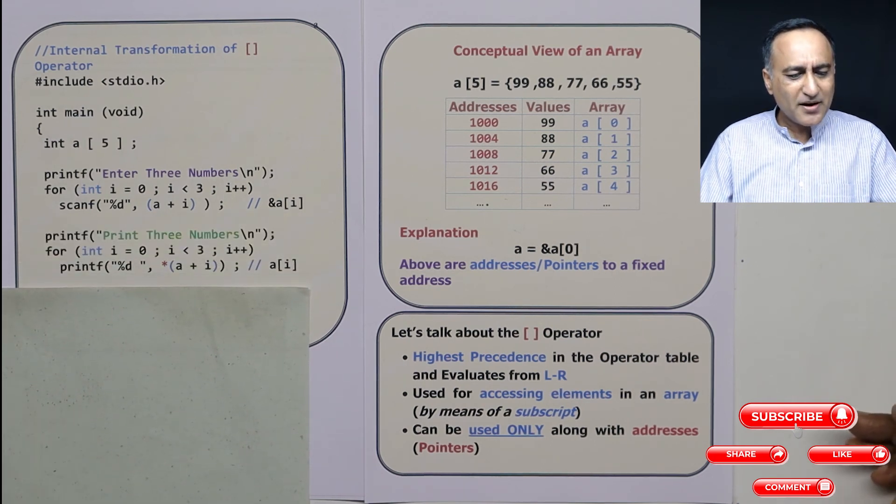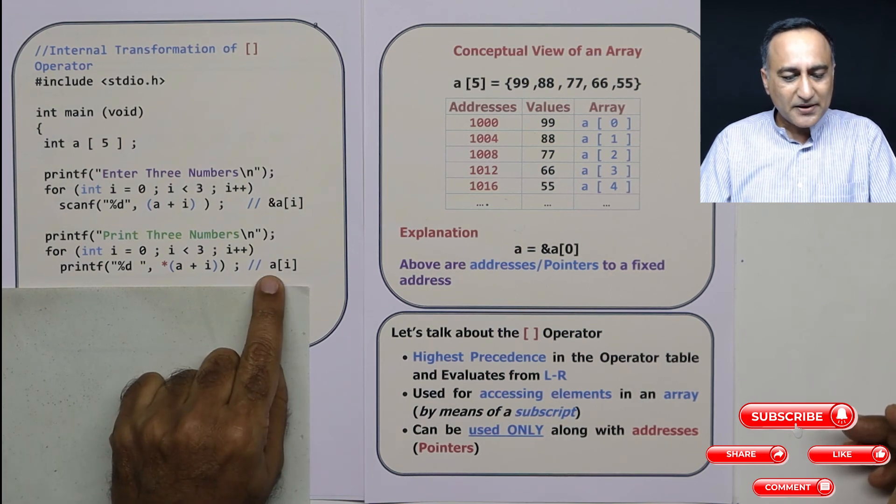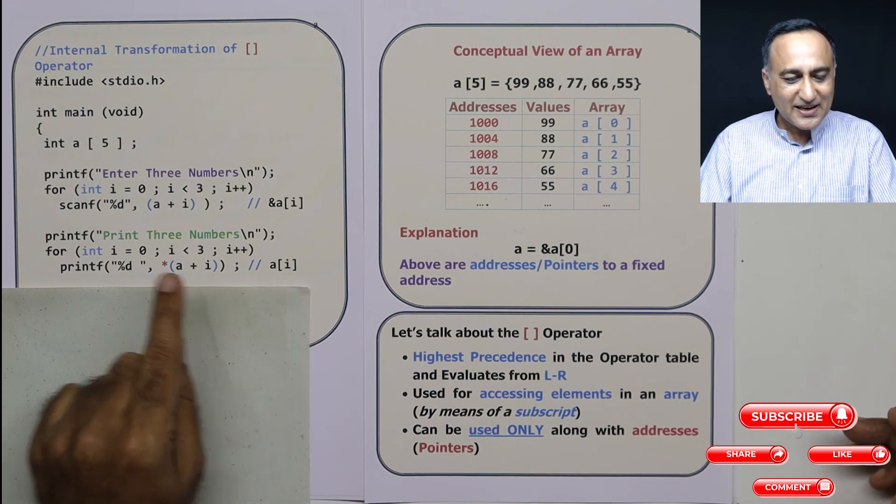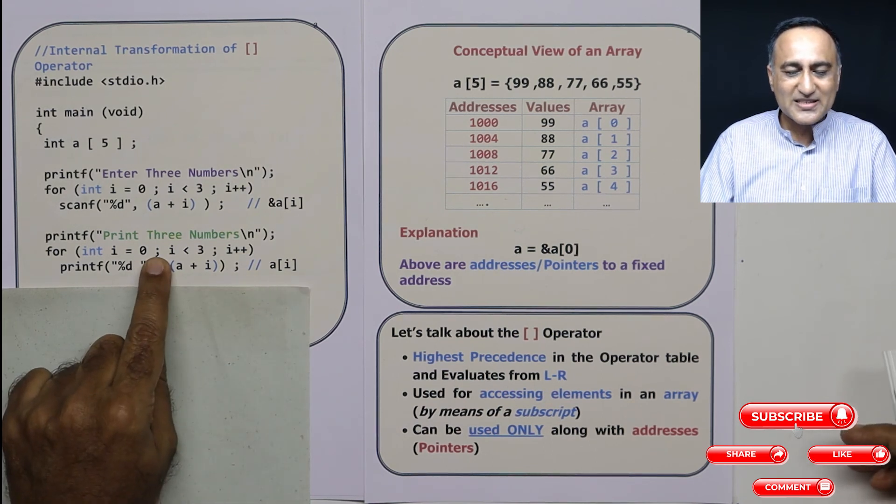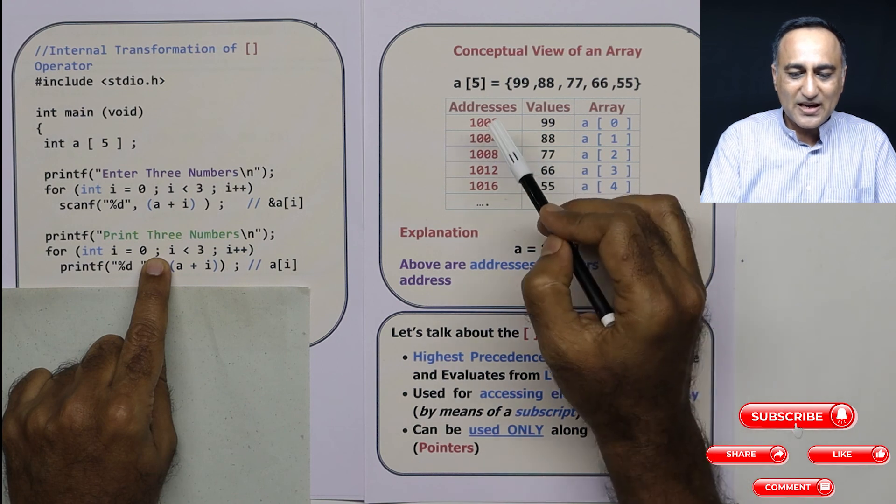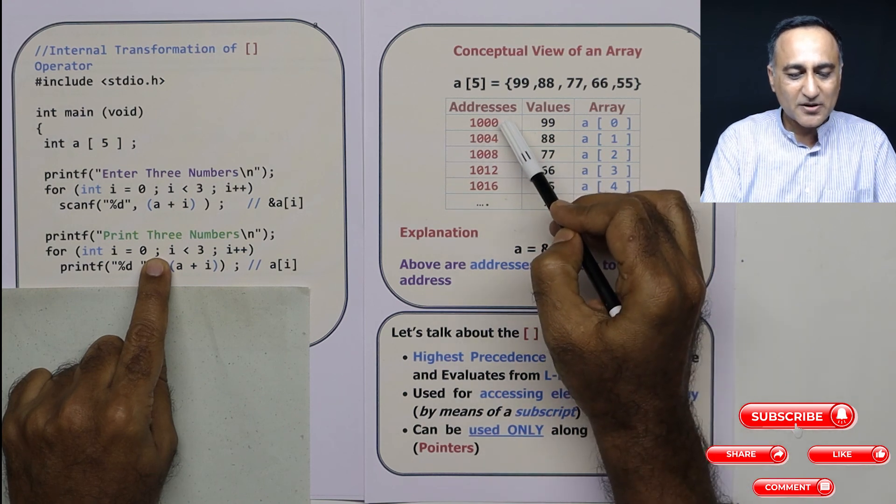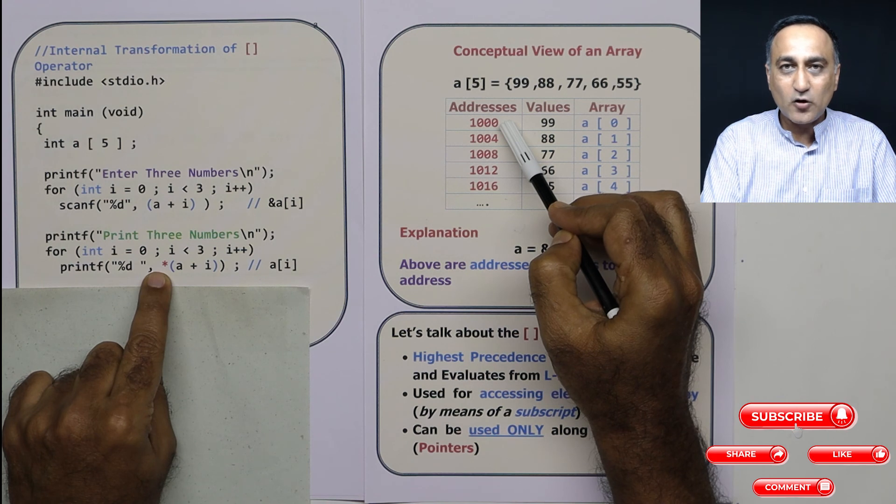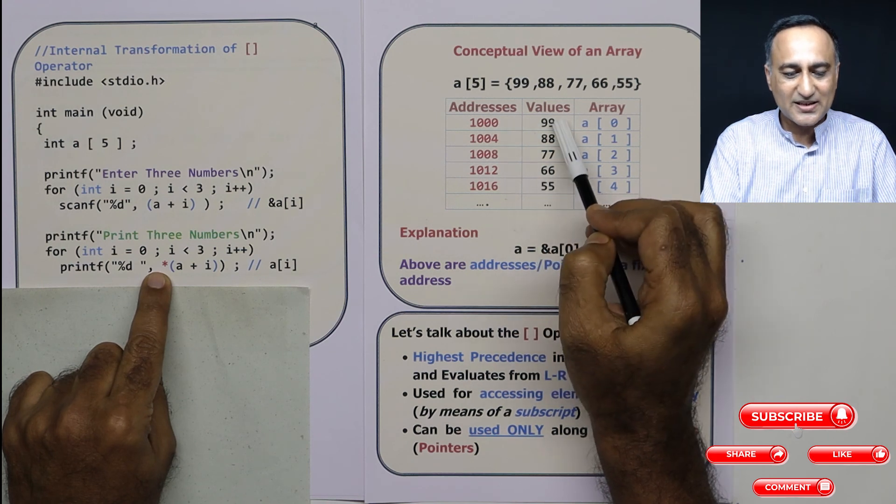Now this should be really simple. Now generally I print the three numbers using A of i. But internally it is again first converted into A plus I. A plus I, I am referring to the thousandth location. But since there is a star, it tells me give me the content or value at thousandth location which is 99.